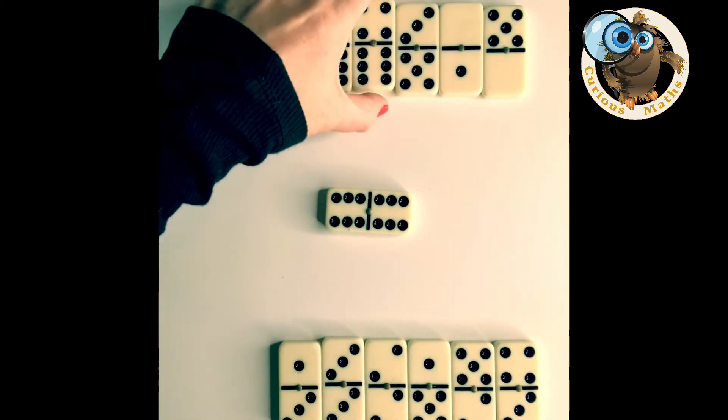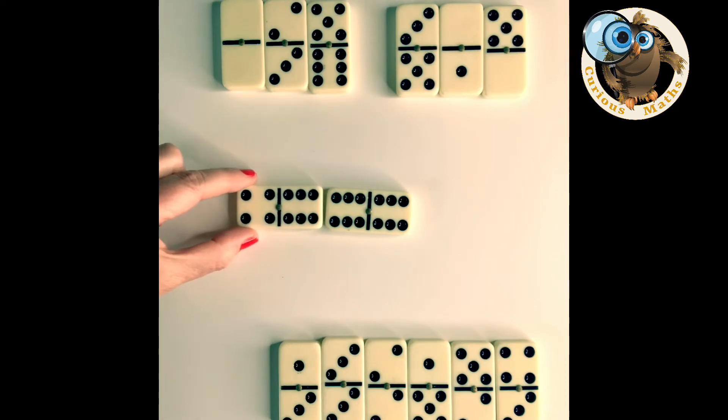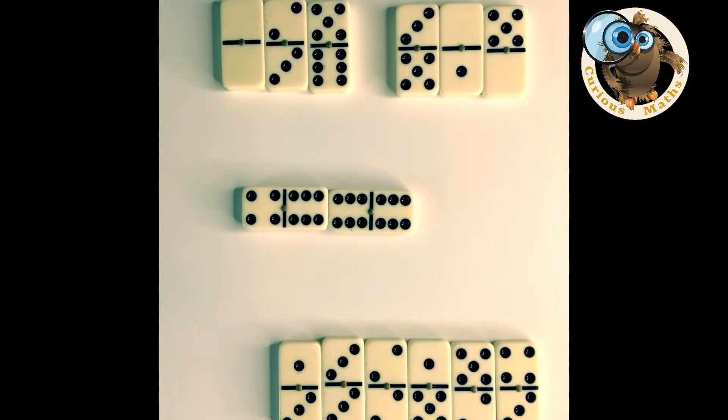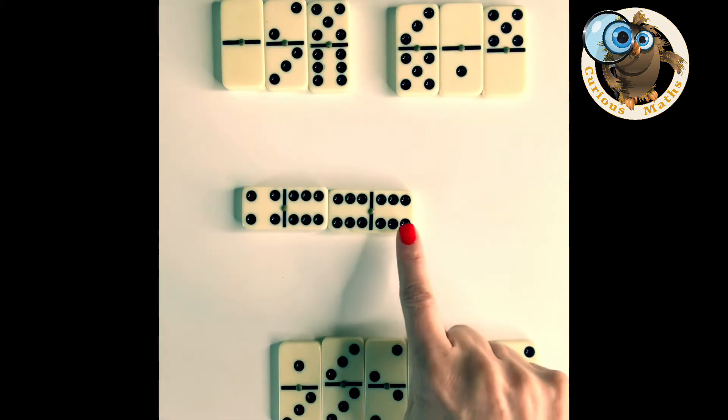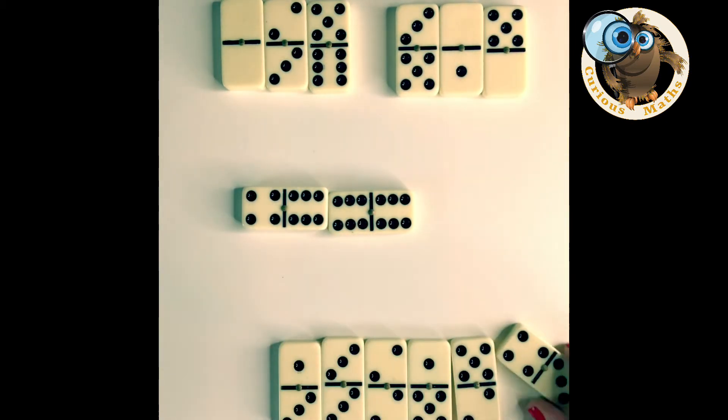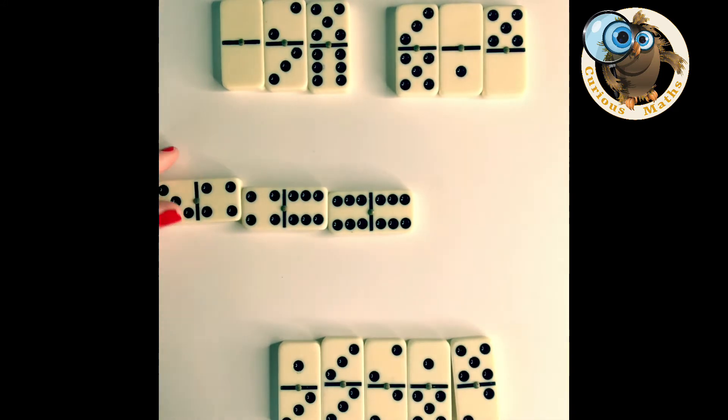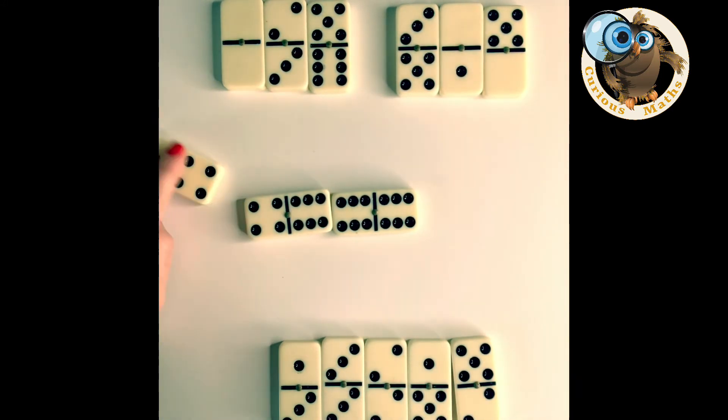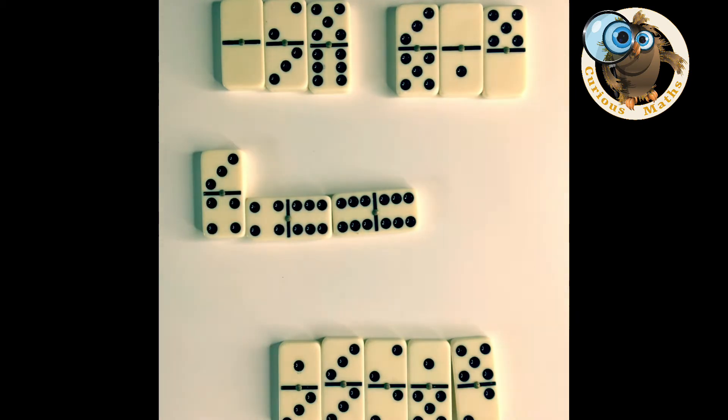So what happens now is the next player needs to match. Now luckily they have a six so they can put a six next to my six and back to me I can either match with a six or a four. I'm going to use my four and I can actually put it in any direction I like, over to this player and so forth and you carry on going until you've got rid of all your tiles. Now if you have a situation where you can't go then you pick up another tile from the set of remaining dominoes, especially if there's less than four people there will always be some remaining.